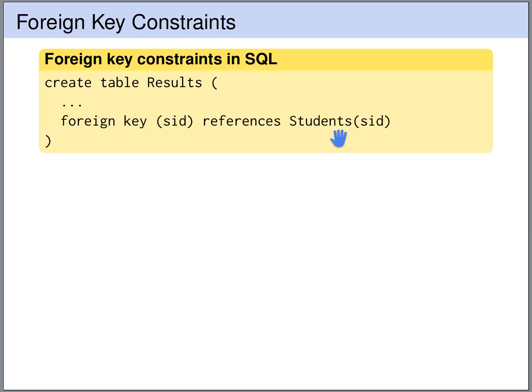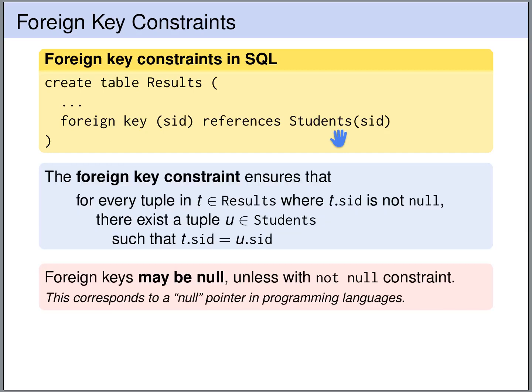This enforces what we discussed. More precisely, this foreign key constraint enforces that for every tuple T in the results table, if the SID of T is not null, then there exists a tuple U in the students table that has the same SID as T. So for every row in the results table, if the SID is not null, then there is a matching row in the students table with the same SID.